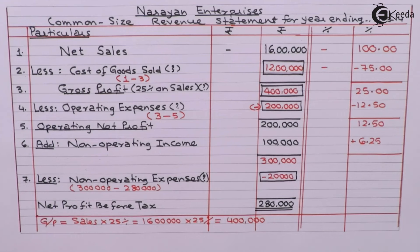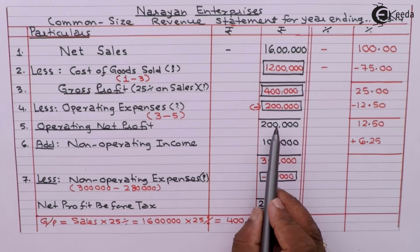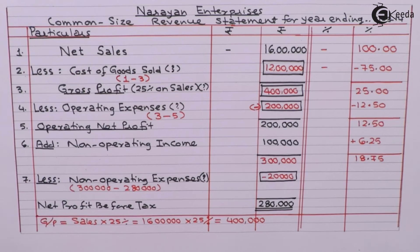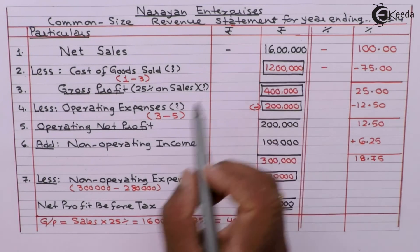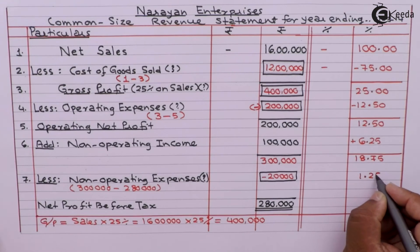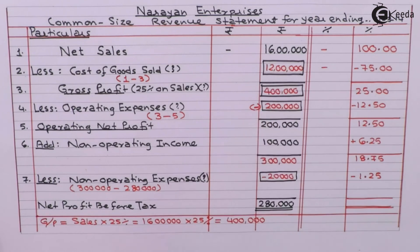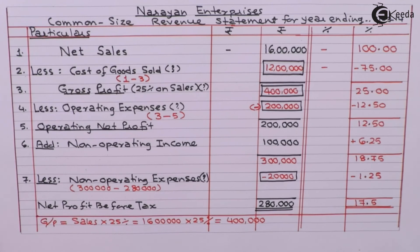Operating net profit is 6.25%. Non-operating income is added, making it 3 lakhs. 3 lakhs divided by 16 lakhs multiplied by 100 gives 18.75%. Non-operating expenses are 20,000. 20,000 divided by 16 lakhs multiplied by 100 gives 1.25%. Net profit before tax is 2,80,000 divided by 16 lakhs multiplied by 100, which is 17.5%.